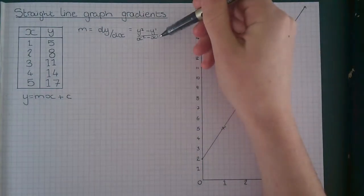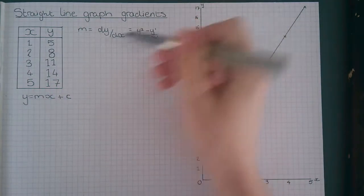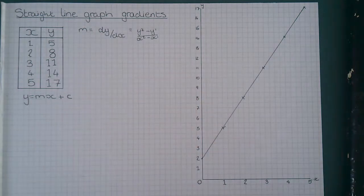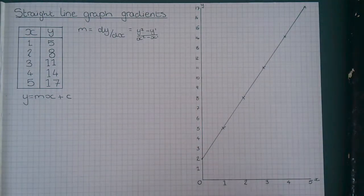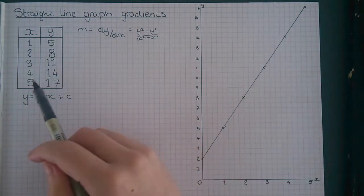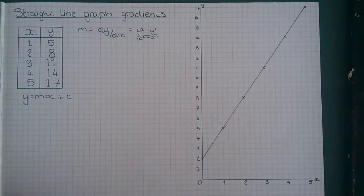For example, x1 and y1 might be 1 and 5, x2 and y2 might be 5 and 17. It can be helpful to draw a triangle between the points you're going to use on the graph. I'm going to use the points 5, 17 and 1, 5, so I will draw my line between those points now.